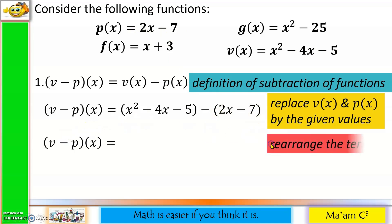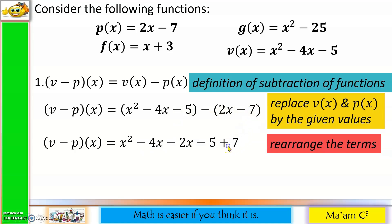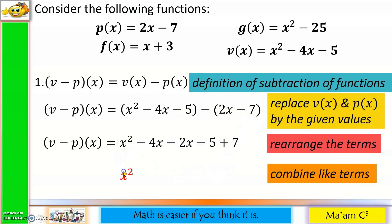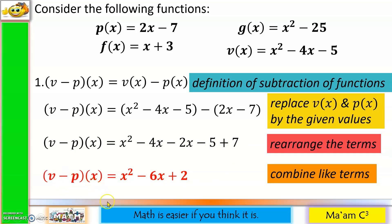Our third step is rearranging the terms: x² − 4x − 2x − 5 + 7. Combining like terms: −4x − 2x = −6x, and −5 + 7 = 2. So the answer for (v − p)(x) is x² − 6x + 2.